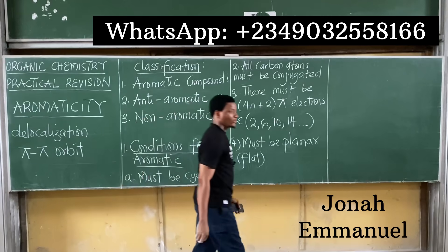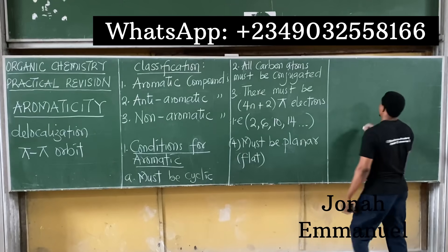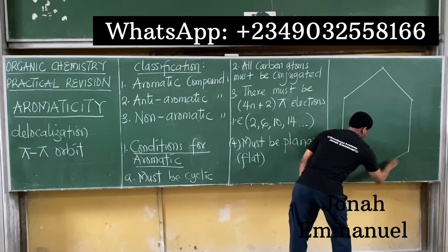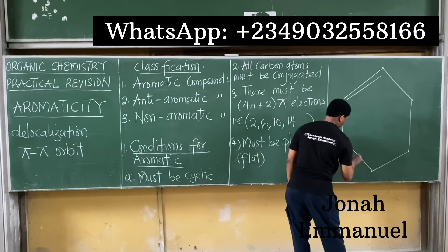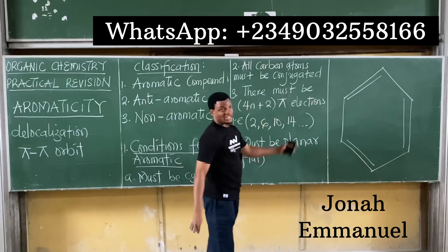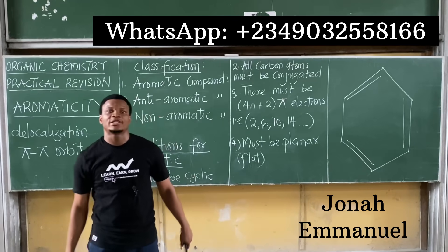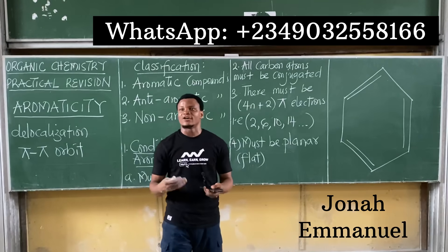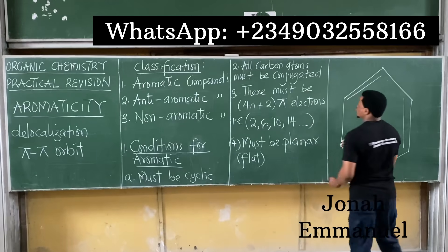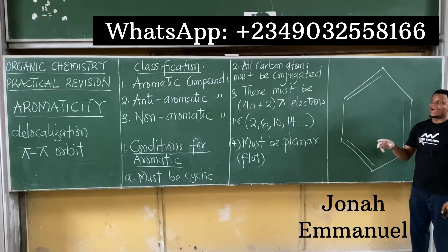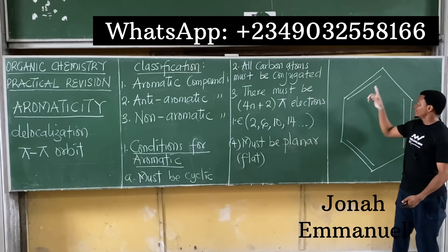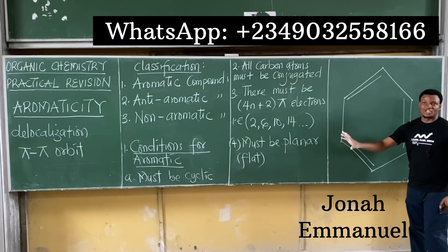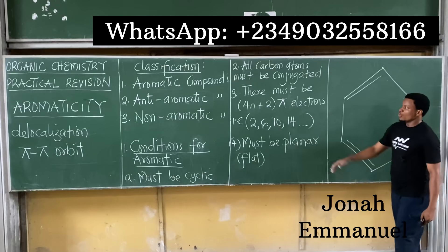Let me take benzene as an example and use these conditions to prove it's aromatic. Here's the Kekulé benzene structure. Condition one: it must be cyclic. Benzene is in ring form — check. Condition two: all carbon atoms must be conjugated, meaning every carbon must have a double bond.